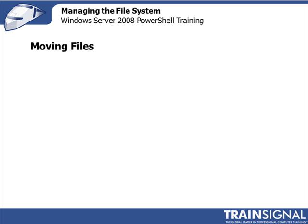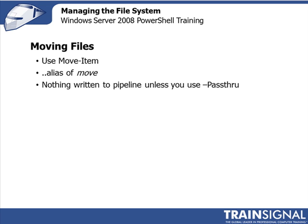Moving files is not that much different than copying a file. We're going to use the Move-Item cmdlet. It has an alias of move and a couple other ones like mv, but move is pretty straightforward. If you've used that in the CMD shell, you should find it very similar in PowerShell. Like Copy-Item, the Move-Item cmdlet does not write anything to the pipeline, so if you want to see results or see the objects, use -PassThrough. One thing to be aware of when you are moving files or folders: the destination folder must exist. Make sure that it is created before you move the files, otherwise you'll get errors or results that are not what you are expecting.